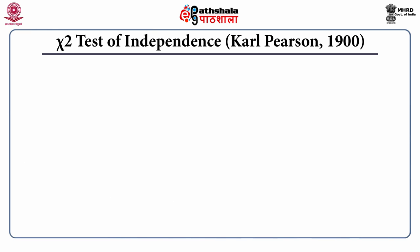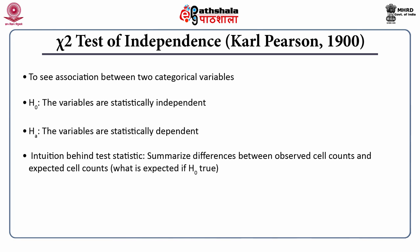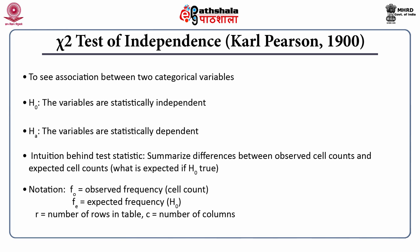The chi-square test of independence, as described by Karl Pearson in the 1900s, tests association between two categorical variables — it is a test of correlation for categorical variables. The null hypothesis is that the variables are statistically independent, while the alternate hypothesis is that the variables are statistically dependent. The intuition behind the test statistic is to summarize the difference between observed cell counts (FO) and expected cell counts (FE) — what is expected if the null hypothesis is true.